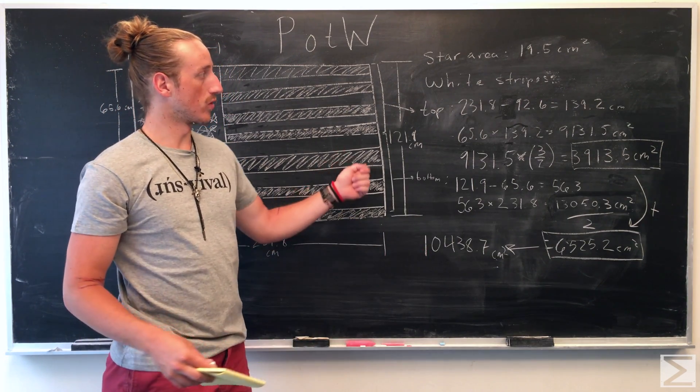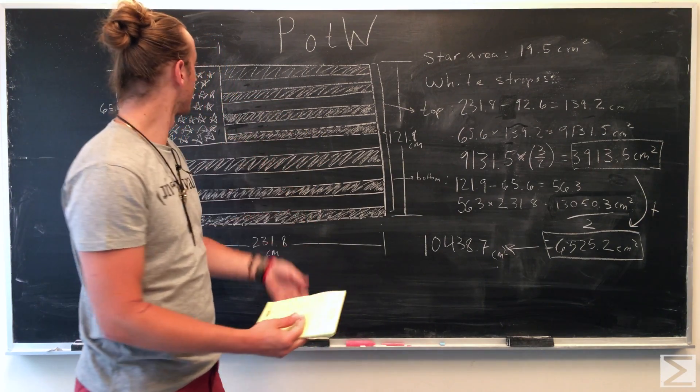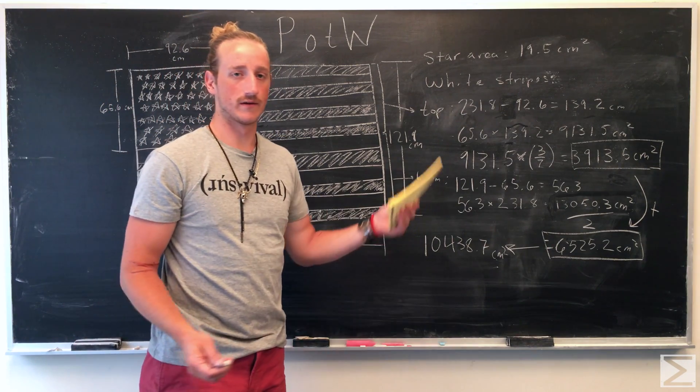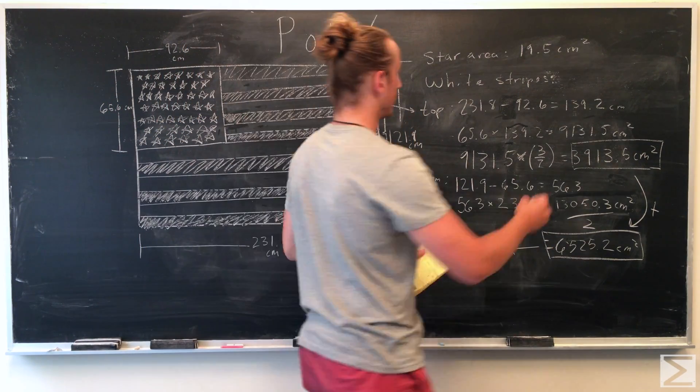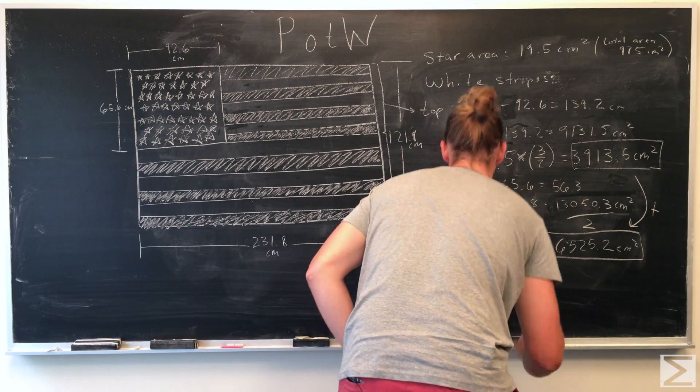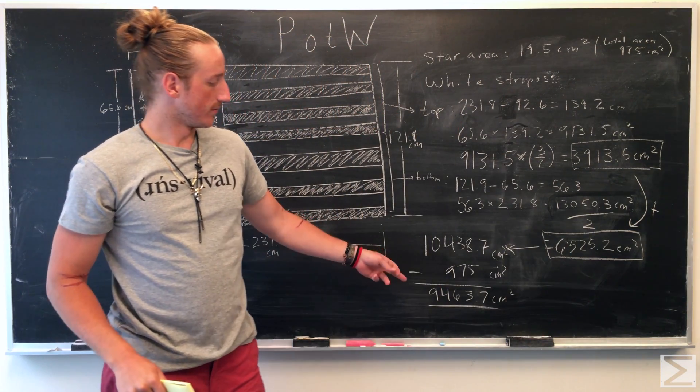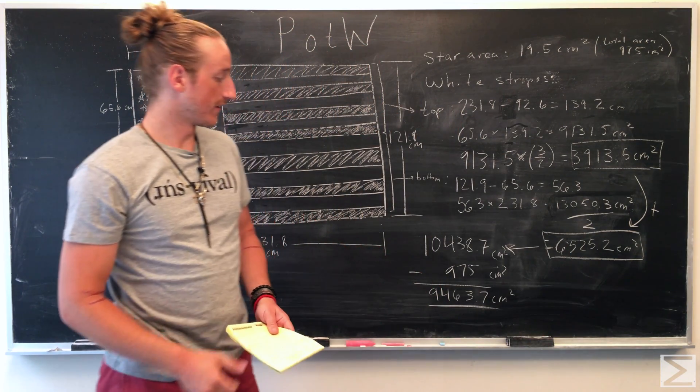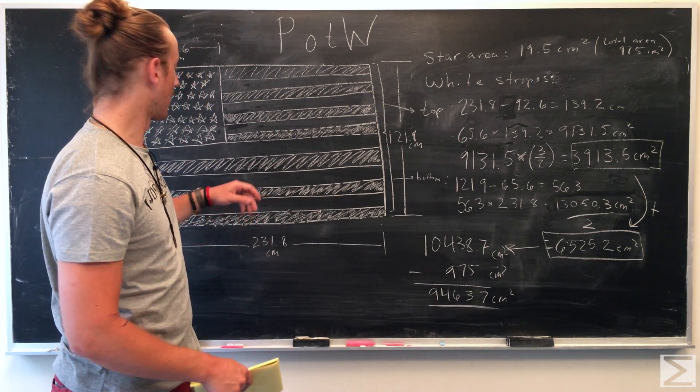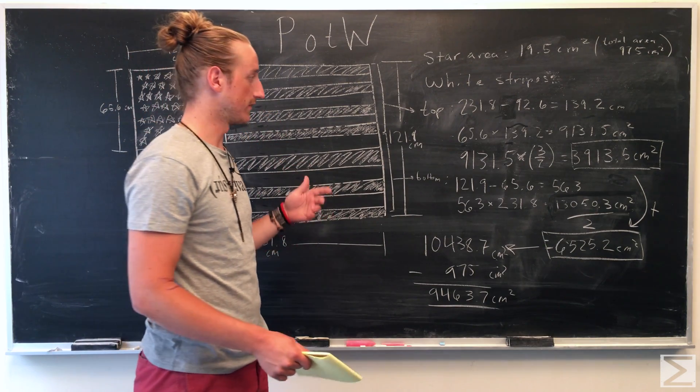The question was, how much more of the flag is covered with white stripes than white stars? We'll just subtract the area of the white stars, which we found to be 975 earlier. 9463.7 centimeters squared is how much more the flag is covered with white stripes compared to white stars.